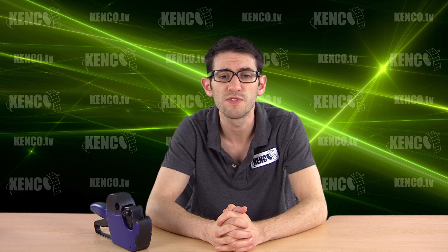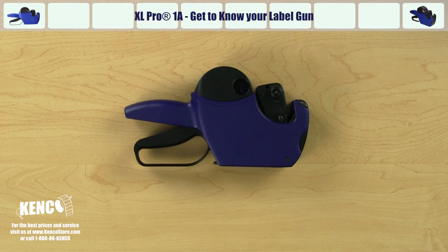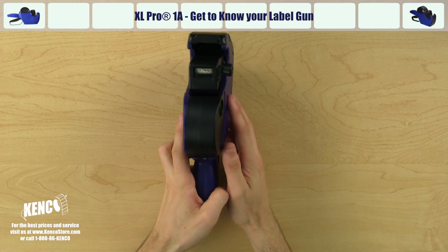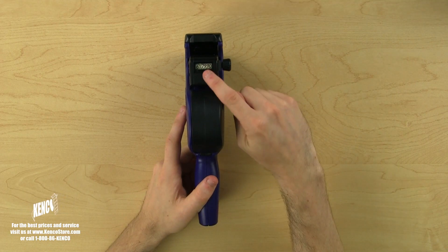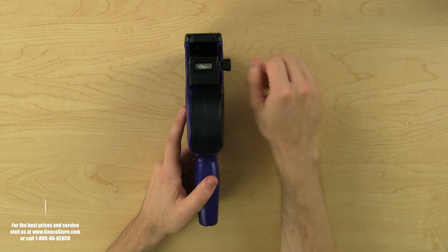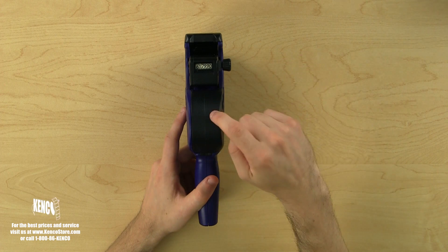Before we begin, let's familiarize ourselves with several key components of the gun. Let's pick up the gun with our left hand and take a look at the top. Right away, you will notice the printhead and the adjustment dial. Below, you will see the label housing cover.